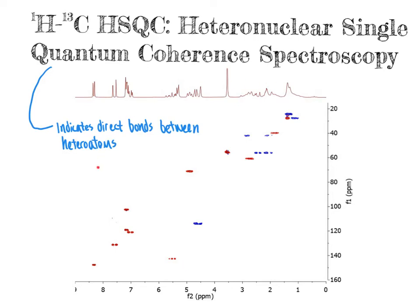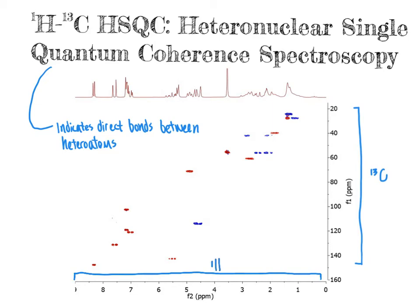Here is the HSQC spectrum for a representative organic molecule. In this two-dimensional NMR spectrum, the y-axis shows carbon-13, as indicated by the range going from about zero up to 160 ppm — far broader than a proton NMR spectrum range. The x-axis ranges from one to about nine ppm, which is within the range of a proton NMR spectrum. So the x-axis has our proton NMR data, the y-axis has the carbon NMR data, and the peaks represent which carbon atoms are bonded to which protons.